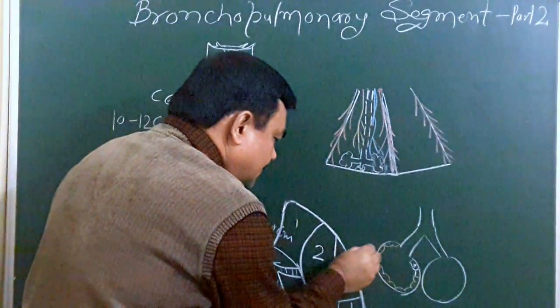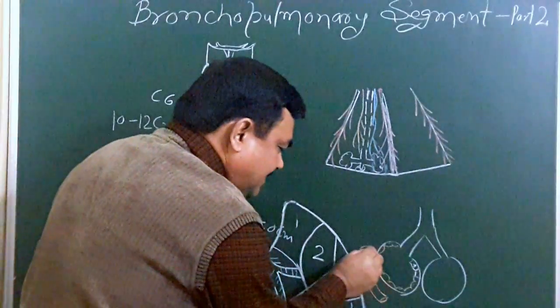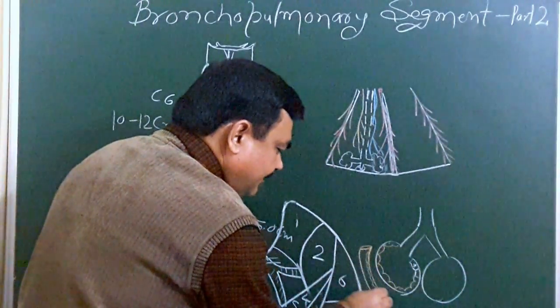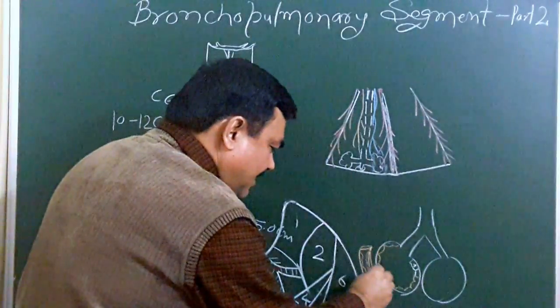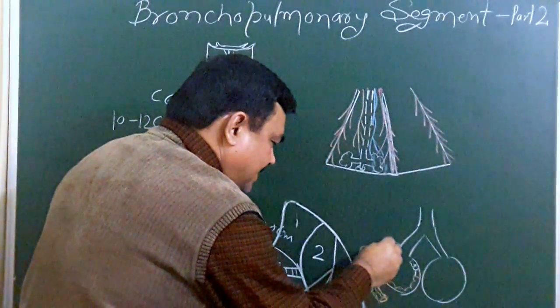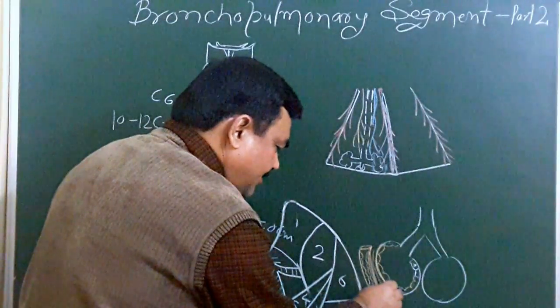Here is the position of the capillary. This capillary is lined by endothelium, simple squamous epithelium. Here is the basement membrane of the capillary. Here is the basement membrane of the alveoli. Here is connective tissue in between them.